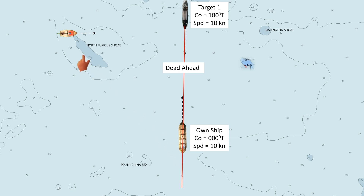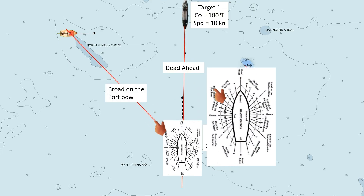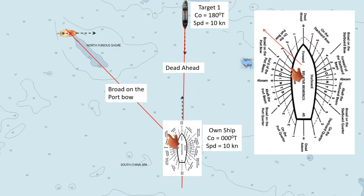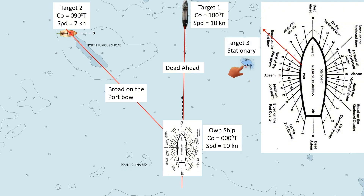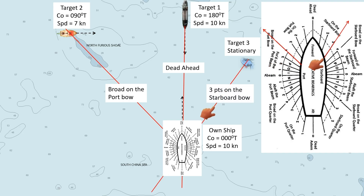Target 2 is a crossing situation involving a fishing boat. The relative bearing of this boat is broad on the port bow, and she is sailing at a course of 090 degrees true with a speed of 7 knots. Target 3 is a stationary target, which is a buoy. Its relative bearing is 3 points on the starboard bow.